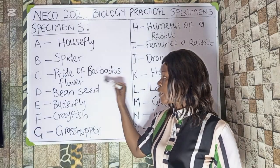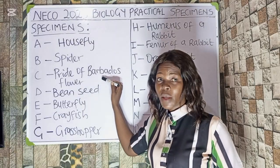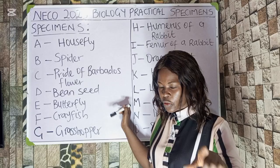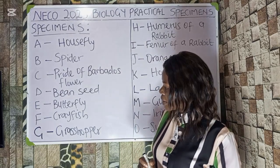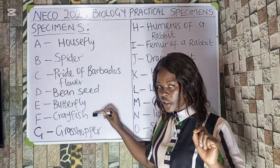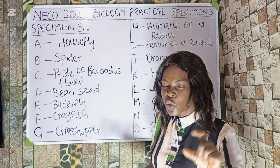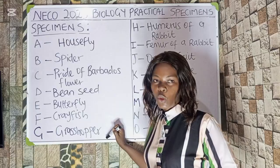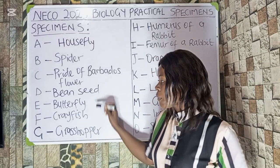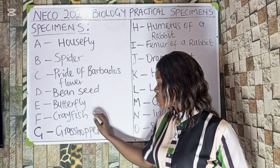Specimen C is the Pride of Barbados flower and Specimen D is the bean seed. This is a flower and this is a seed — there is a relationship between these two that you should take note of. Specimen E is butterfly, Specimen F is crayfish, and Specimen G is grasshopper. There is a relationship between crayfish and grasshopper, and also a relationship connecting butterfly and grasshopper.